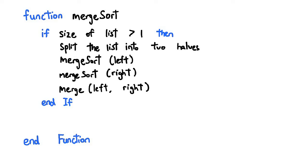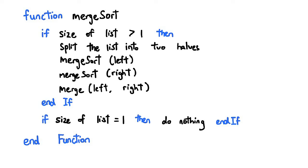In that case, we simply merge the two lists again to create an even larger sorted list. Of course, every recursive function needs a base case. For Merge Sort, this happens when the algorithm is told to sort a list of size 1. Nothing more needs to be done to the list since it cannot be split further, so no further copies of Merge Sort need to be called. And basically, that is it for Merge Sort.